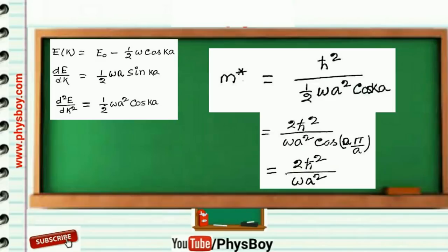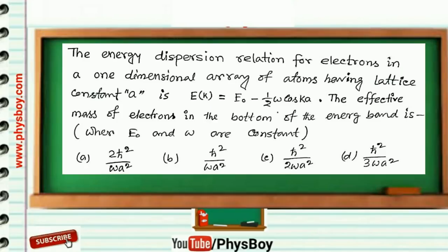If you insert the value of K into this effective mass expression, then it becomes M* = 2ℏ²/(ωa²) cos(π). Now the value of cos(π) is -1, so effective mass of the electron in the bottom of the energy band becomes negative.